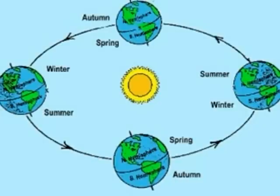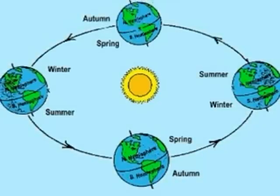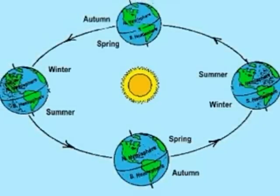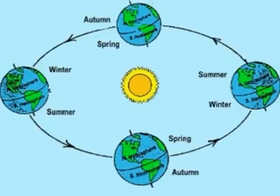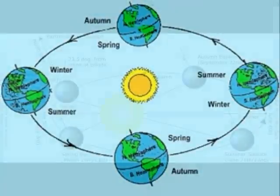Due to the tilt of the earth and the shape and path of the orbit, days are longer in summer than nights. In winter, days are shorter than nights.